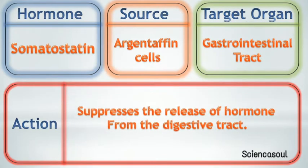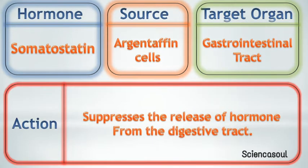Ninth hormone is somatostatin. Source of somatostatin is argentaffin cells, and target organ of somatostatin is the gastrointestinal tract. Action of somatostatin is to suppress the release of hormones from the digestive tract.